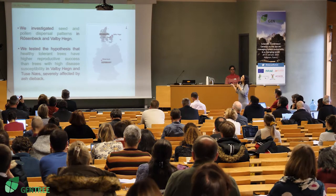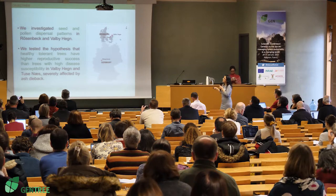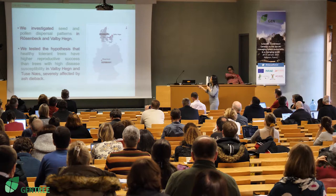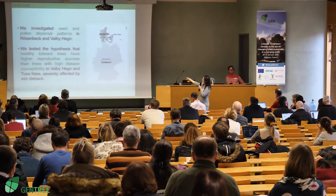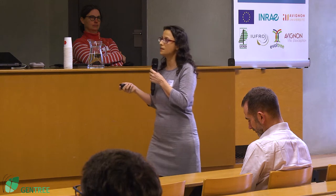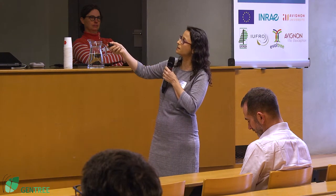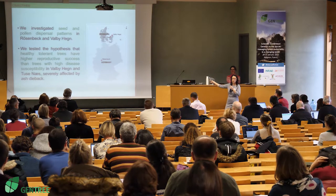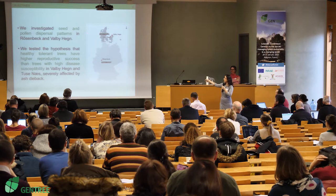Based on this introduction, we wanted to investigate seed and pollen dispersal patterns in two study fields: Rosenbeck in Germany and Valbehind in Denmark. We also wanted to test the hypothesis of whether healthy, tolerant trees have higher reproductive success compared to unhealthy or susceptible ones — tested in two sites in Denmark, where the disease is quite highly prevalent.